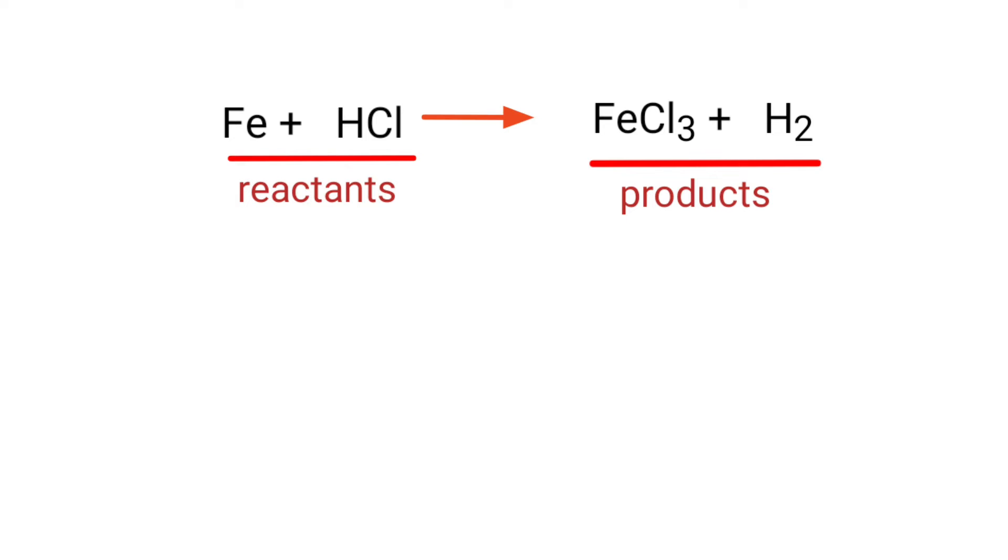In this equation, the reactants are iron and hydrochloric acid, and the products are ferric chloride and hydrogen.